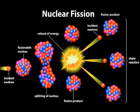This is a pictorial depiction of nuclear fission. Here, an incident neutron hits a fissionable nucleus, causing release of energy, then splitting of the nucleus, then further release of energy. These are the fission products after the incident neutrons and fission products are split, and this becomes a chain reaction.